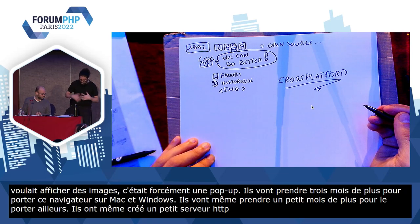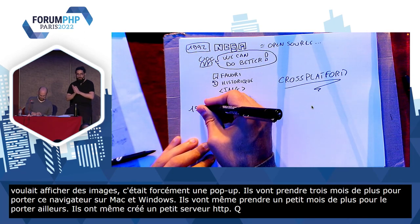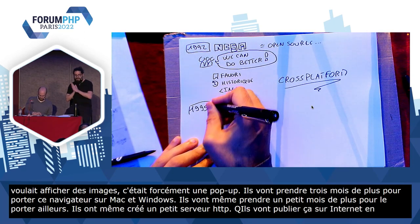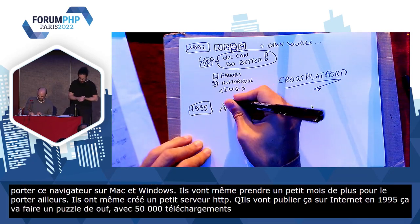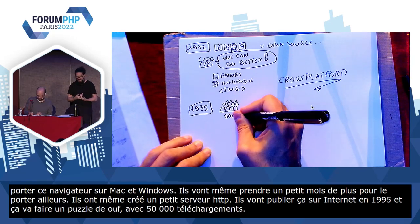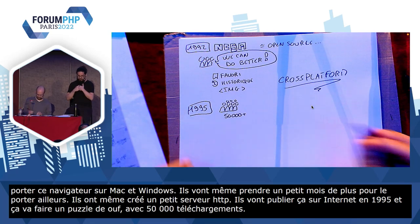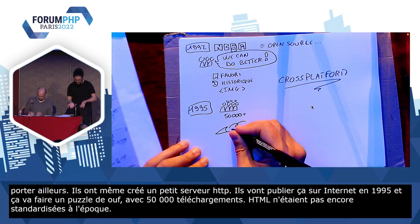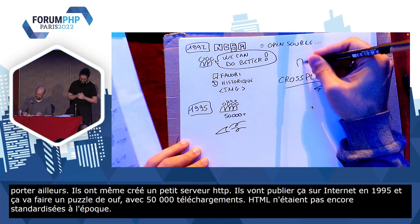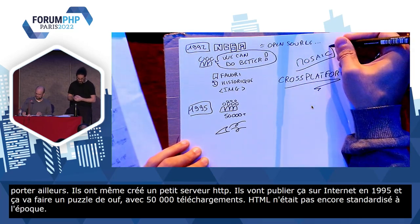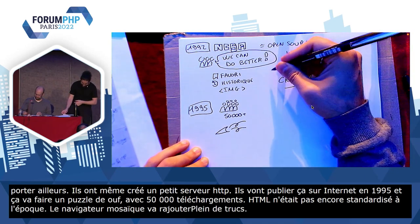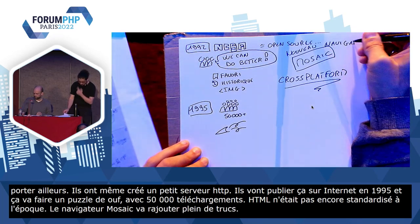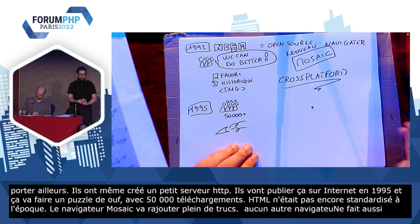Ils vont publier ça sur Internet début 1993, et ça va faire un buzz de ouf avec 50 000 téléchargements. Il n'y avait pas beaucoup de gens sur Internet à l'époque, donc oui, 50 000 téléchargements, c'est un truc de ouf. L'HTML n'était pas encore standardisé à l'époque. Et donc, ce navigateur — qui s'appelle Mosaic — va rajouter plein de trucs. J'ai déjà parlé des éléments IMG, on rajoute même les formulaires, le son, la vidéo. Il n'y a aucun autre navigateur qui fait aussi bien, et le web commence, grâce à Mosaic, à devenir plus que juste de la documentation.